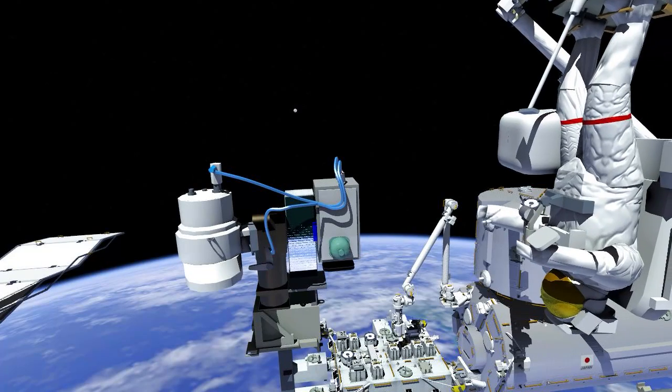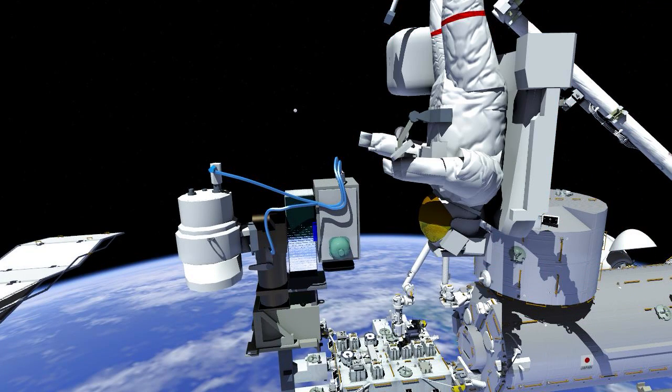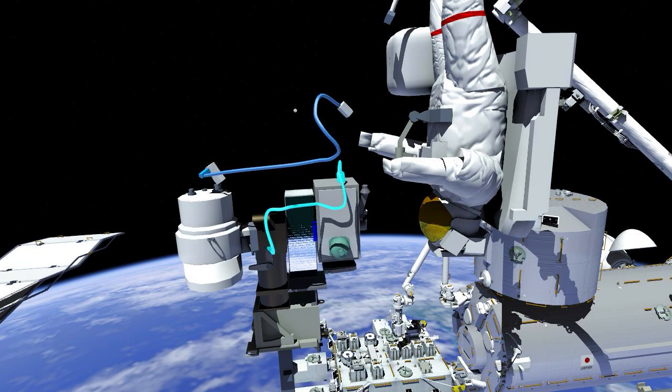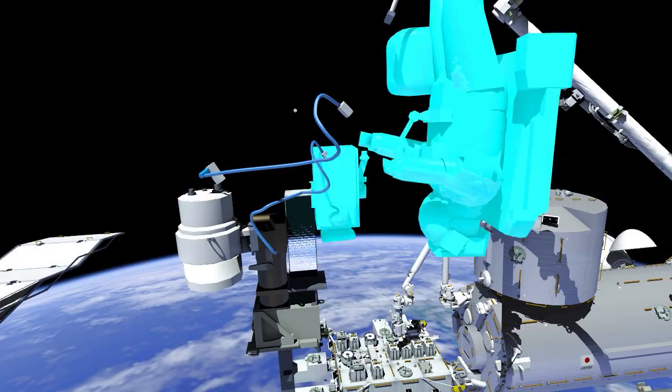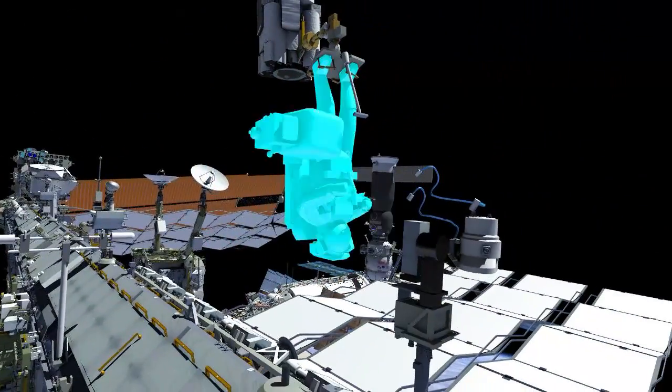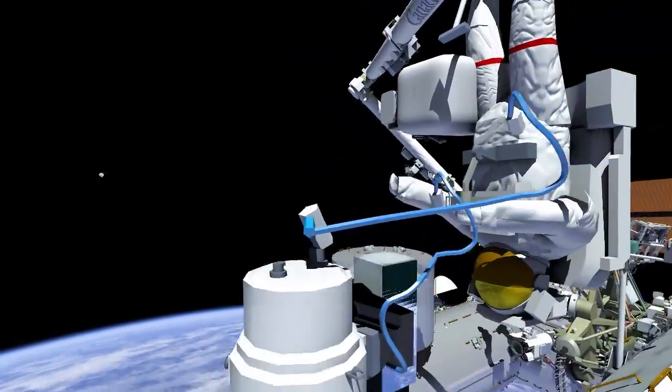While EV2 was retorquing the 4 alpha bolts, EV1 replaced the existing external high definition camera with one that provides improved two-way high data rate communications between external payloads and earth.